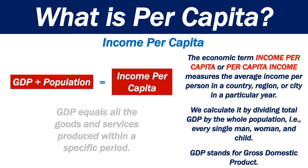The economic term income per capita, or per capita income, measures the average income per person in a country, region or city in a particular year. We calculate it by dividing total GDP by the whole population.